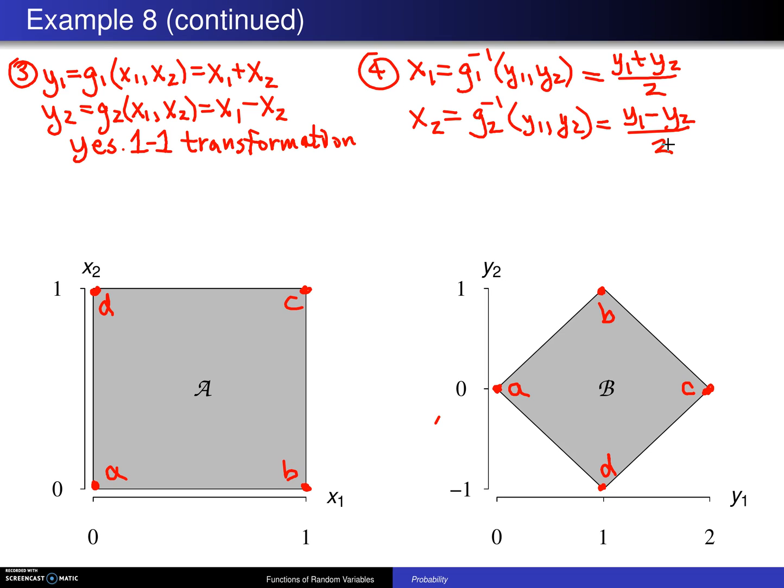Now the next thing that you want to do is you want to find the Jacobian because you know you'll need that later. And so here is the Jacobian. First thing we do is we take the partial derivative of x1 with respect to y1, and that is one-half. And then we take the partial derivative of x1 with respect to y2, and that is also one-half. And then we take the partial derivative of x2 with respect to y1, and that is one-half. And finally, we take the partial derivative of x2 with respect to y2, and that is negative one-half. And you know the Jacobian of a, or the determinant of a two-by-two matrix is going to go like this. So we have negative one-fourth minus one-fourth, and that gives you negative one-half. There's your Jacobian.